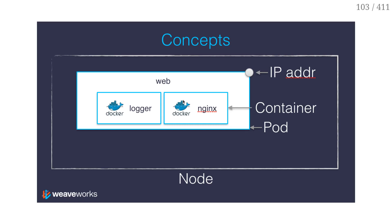The interesting bit is that network namespaces can be shared between containers. So I can have multiple containers with the same network namespace. In fact, when you have a normal Linux machine, by default it has one network namespace and all the processes run there — and that's fine. So when I run a pod, I get a network namespace, I get an IP address, and then all the containers in that pod are just like processes running together on a machine.